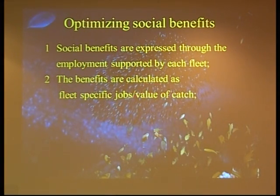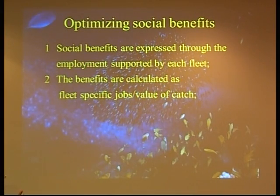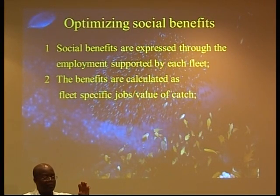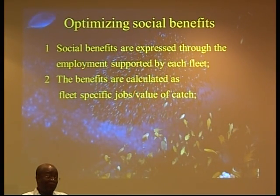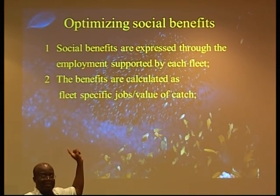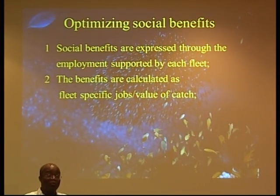Social benefits are expressed through employment — there's mainly employment. The benefits are calculated as fleet-specific jobs per value of catch. If you catch fish with a vessel and sell the fish for a million dollars in a year, how many people can you employ to do that? Some boats are very efficient — three people to take one million dollars worth of fish. We don't like those. We like boats that use more people to catch and sell a given quantity or value of fish.